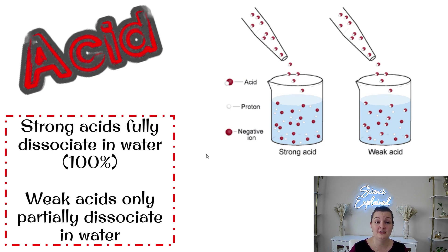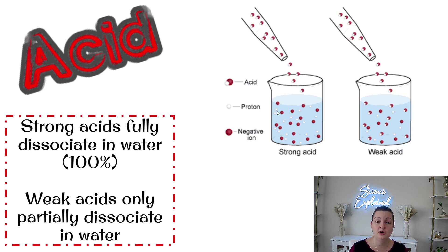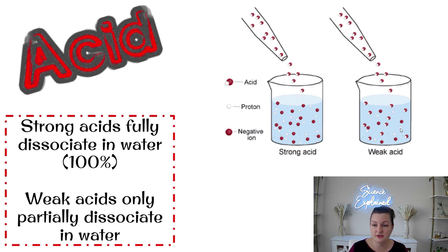Let's look at acids more carefully. Strong acids fully dissociate in water 100%, and weak acids only partially dissociate. Dissociation means it breaks apart from its molecule and goes into ions — cations that are positive and anions that are negative. In a strong acid, all of them separate out in water. In a weak acid, when dissolved in water, some of them stay together and some dissociate into ions.